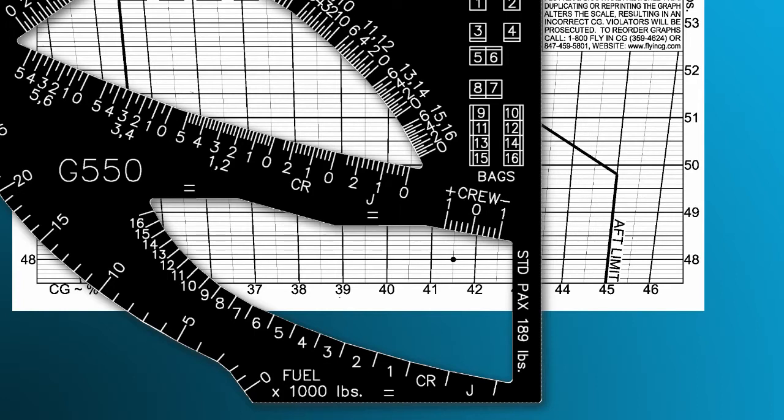Since a basic operating weight includes the weight of the crew, there may be an instance where you want to adjust the basic operating weight for any differences in the crew weight. For instance, you have 380 pounds for the crew weight in the BOW computation, but in fact the crew is about 50 pounds lighter. Well, there is a way to correct for that.